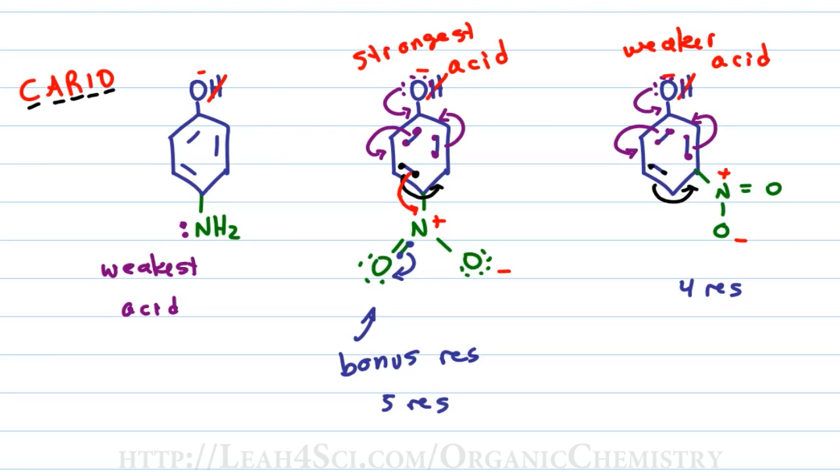So if we threw phenol into the mix and then ranked it from weakest to strongest, the weakest acid would be the one with the NH2 because the NH2 is slowing down the negative resonating into the ring. Then we have the phenol itself because we don't have any groups to make it stronger or weaker than phenol itself.